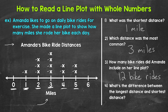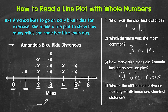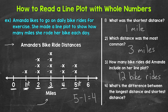Lastly, question four: what's the difference between the longest distance and the shortest distance? When we find the difference, we subtract. The longest distance is five miles and the shortest distance is one mile. Five minus one gives us four. The difference between the longest and shortest distance is four miles.